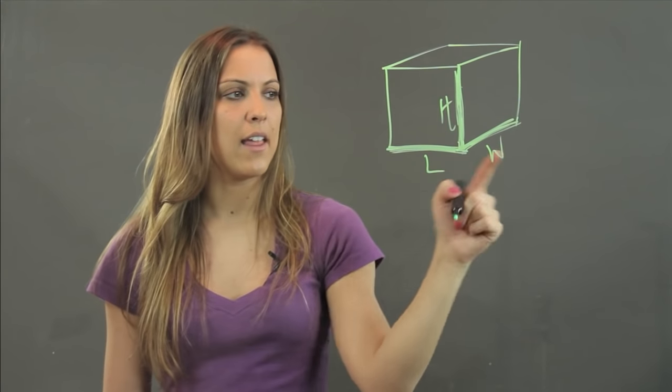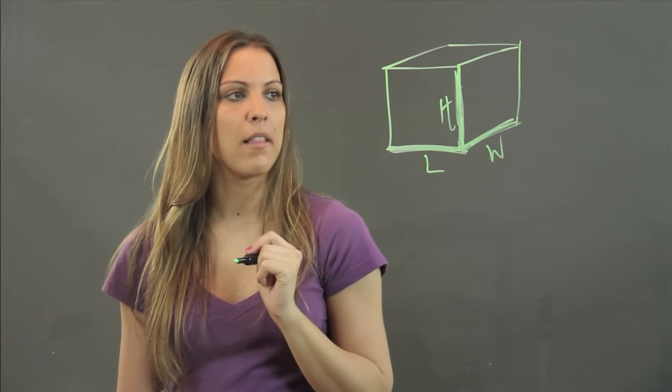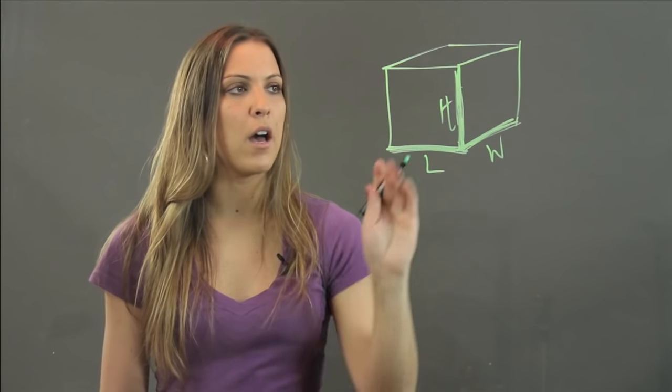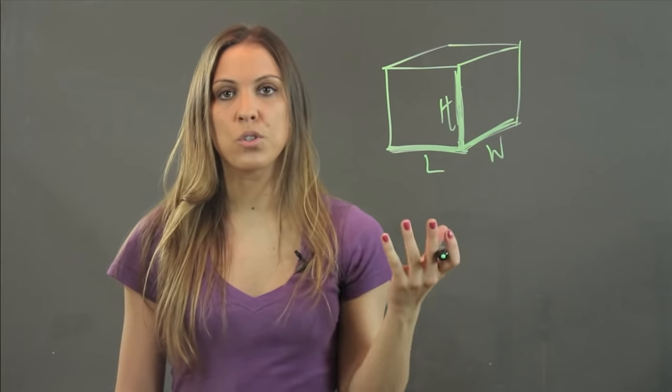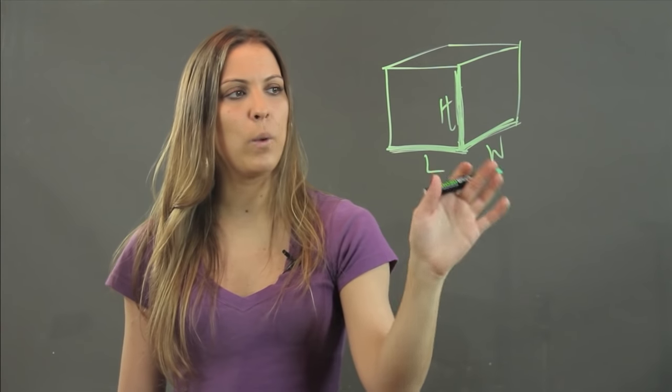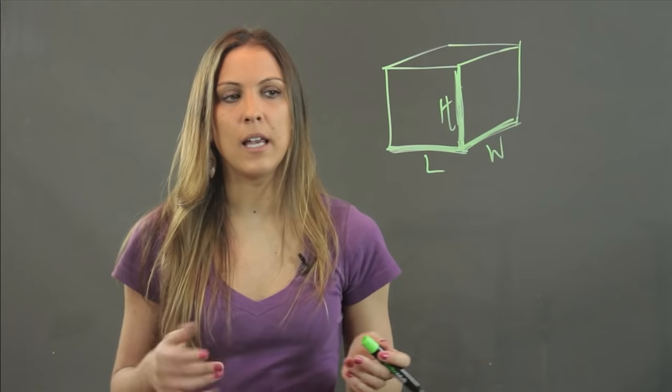So these are my three dimensions: length, width, and height. But like I said, I know that a cube is made up of six faces that are all squares, which means that my length, width, and height are actually going to be all the same.